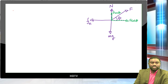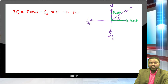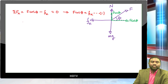Applying Newton's second law in the x direction: F cosine theta minus f_k equals zero (constant velocity). So F cosine theta equals f_k — call this equation 1. In the y direction: N plus F sine theta minus mg equals zero — call this equation 2.